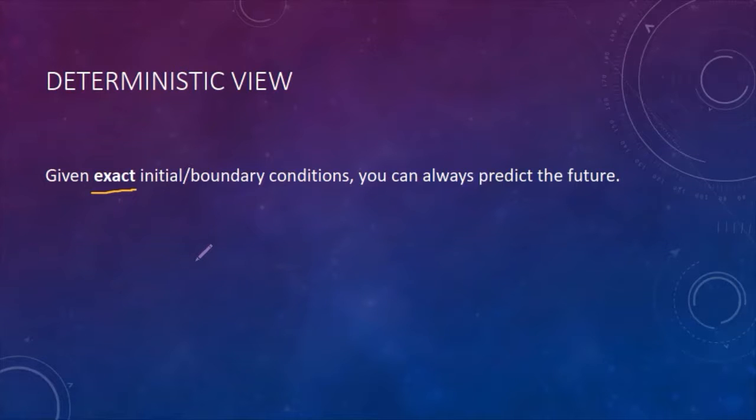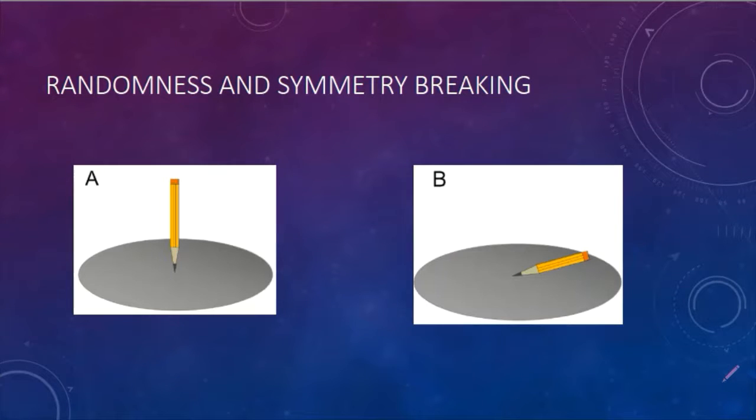And even in some phenomena, perfect knowledge of initial condition may lead to unknown or unpredictable outcome because of the so-called randomness. If you hold a pencil in perfectly symmetrical condition, it has the same chance of picking any direction to fall. Even with complete control of initial condition, you can only predict the future with some probability.